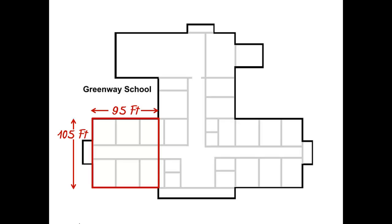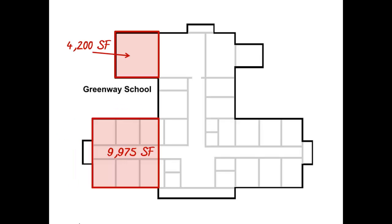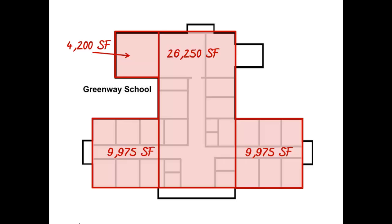It's also helpful to measure portions at a time. In this example, we're measuring one of the wings — 95 by 105 square feet. We multiply those together and we get almost 10,000 square feet. Then we go around to the other sections of the school until we get all the sections calculated.